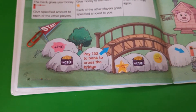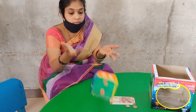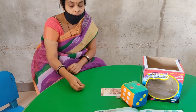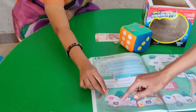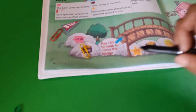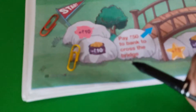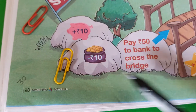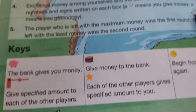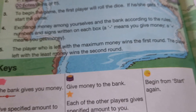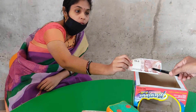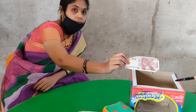Now the next member will play. Prithim got 2, so moving 1, 2. The sign is minus 10. Minus means you give money, so you have to pay 10 rupees to the bank. Give 10 rupees to the bank.